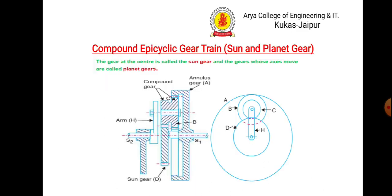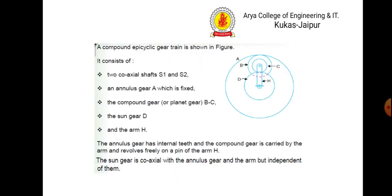The compound epicyclic gear train is also known as sun and planet gear. The gear at the center is called the sun gear, which is gear number d, and the gears whose axes move are called planet gears — say gear number b and c.